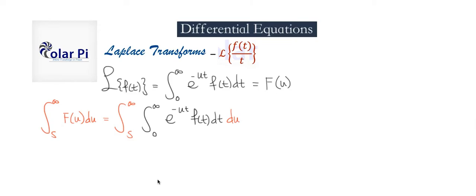Now we have a double integral, so we can, if we choose, change the order of integration — that is, swap where dt and du appear, and therefore swap these limits of integration also. If we do that, this is what we get.